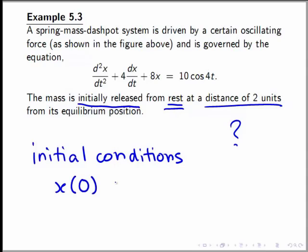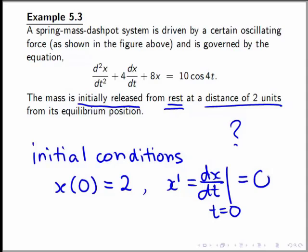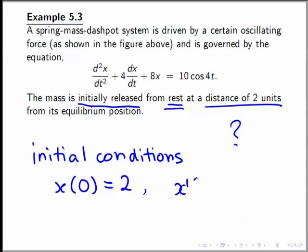Now, x at zero is equal to two. And x prime at zero is also zero. In other words, x prime here is dx/dt. And at t equals to zero, x prime is zero. Or we can simply write x prime at zero equals to zero.